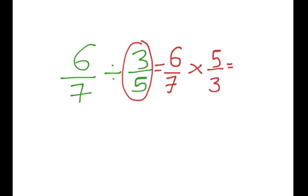Now what you want to do next is the following. 6 times 5 is 30. 7 times 3 is 21. And now we would simplify by dividing the top and bottom by 3. So 30 divided by 3 is 10. 21 divided by 3 is 7. And that's it. Simplified. There we go. That's the answer.